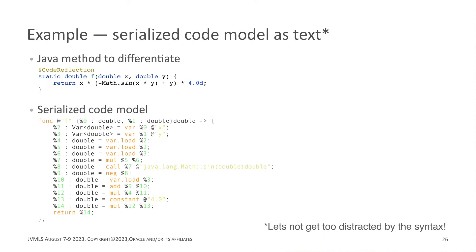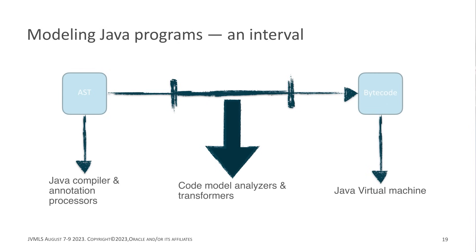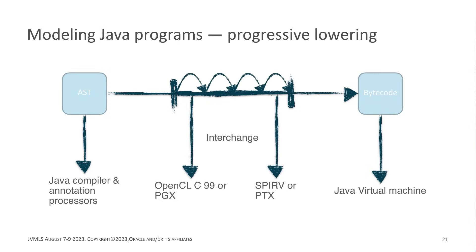The code model describes the Java program in a symbolic form, down to individual variable declarations, method calls, arithmetic operations, etc. It's a detailed description of that program, much like bytecode, but instead of being designed and optimized for execution by the JVM, it targets libraries that need to access, analyze, and transform a Java program — and it has APIs that allow just that. An interesting aspect Paul pointed out is that there is no one level of abstraction that suits all use cases. Instead, he envisages an interval of abstraction within which the code model can be lowered and lifted.